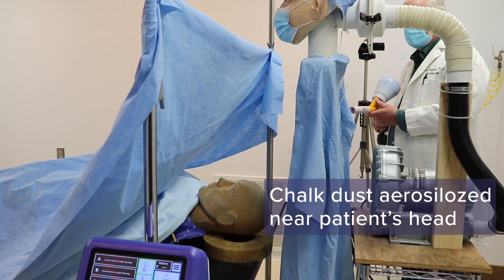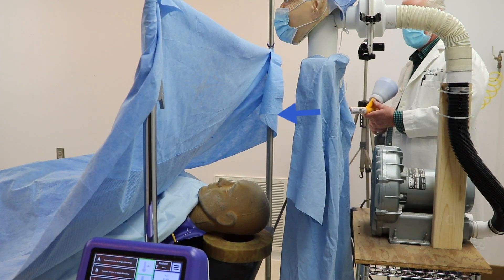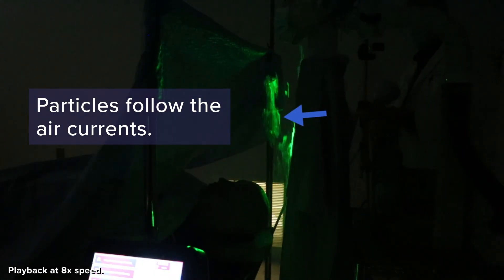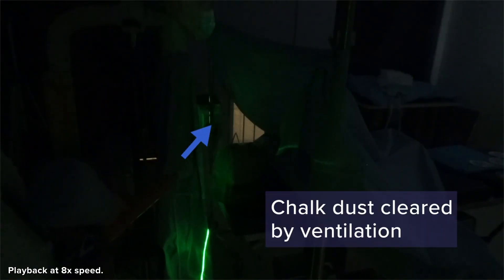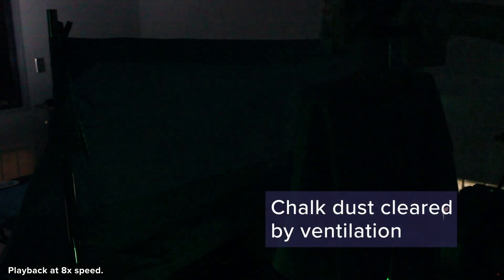Chalk dust is aerosolized near the patient's head under the anesthesia drape. It is sprayed ten times from the same angle and position as the forced air warming experiment. With no waste heat, the chalk is cleared downward by the laminar flow ventilation.